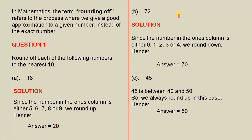The next one is 72. Since the number in the ones column is either 0, 1, 2, 3, or 4, we round down. So we can see that's the number 2, so we round down, which means that 72 is closer to 70 than it is to 80. Hence, to the nearest 10, we round down to 70.